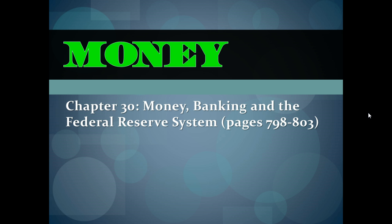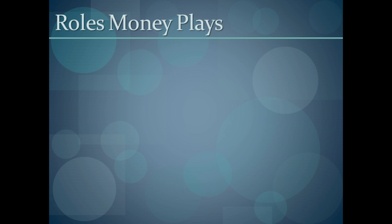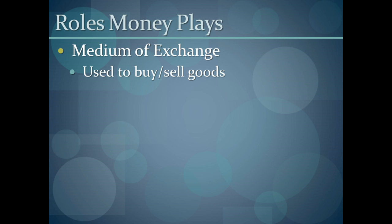All this information is in chapter 30 of your book. The first thing is the roles that money plays — what does it take to be money? Something is money if it embodies three different characteristics. One is that it has to serve as a medium of exchange, meaning it has to be accepted for the purchase of goods — it's something we use to buy and sell goods with.